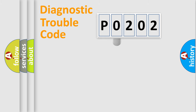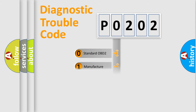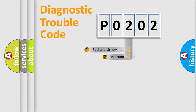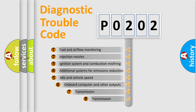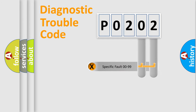This distribution is defined in the first character of the code. If the second character is expressed as zero, it is a standardized error. In the case of numbers 1, 2, or 3, it is a more specific expression of a car-specific error. The third character specifies a subset of errors. The distribution shown is valid only for the standardized DTC code. Only the last two characters define the specific fault of the group.